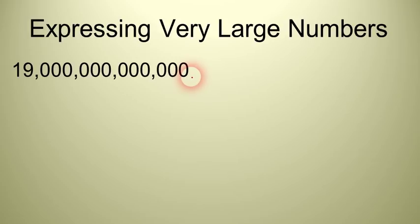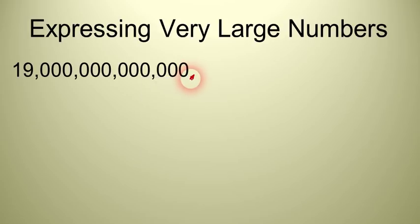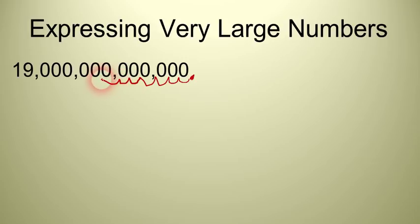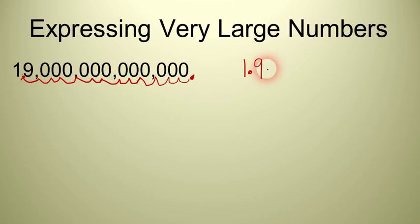What you have to do is start by looking at the understood decimal point — there's understood to be a decimal point right there. We're going to move it so that the number is in between one and ten. I'm going to move this decimal point to the left, and we start counting spaces. Counting over: six, seven, eight, nine, ten, eleven, twelve, and one more — that's thirteen places. So we just moved it thirteen places to the left, and the number is now 1.9.